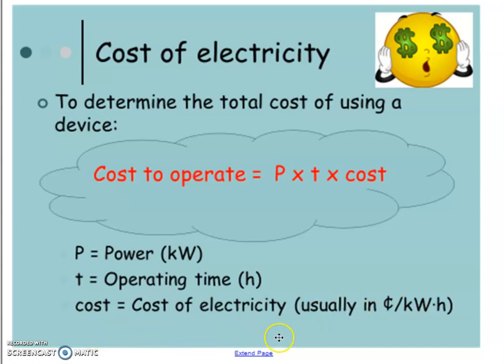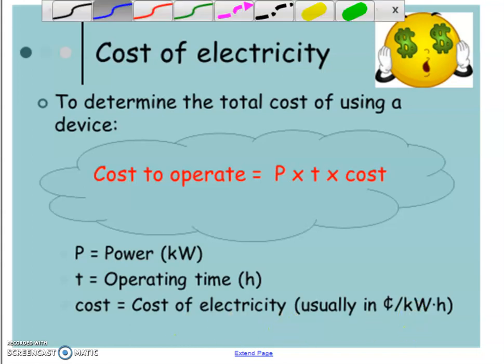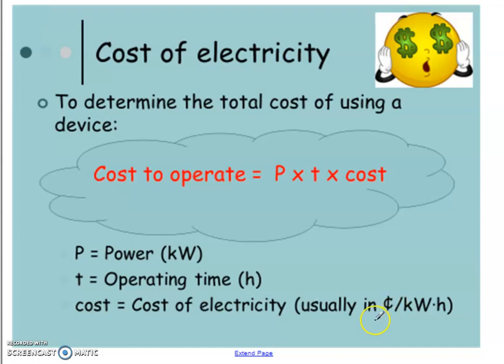And of course, we have to consider how much are we being charged for every kilowatt hour that we are using that load. So the cost for electricity in kilowatt hours is usually determined in terms of cents. So you charge a certain amount of cents for every kilowatt hour that is being used.